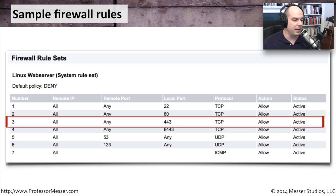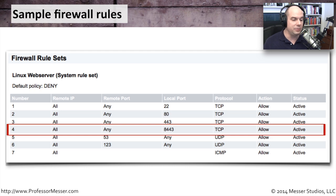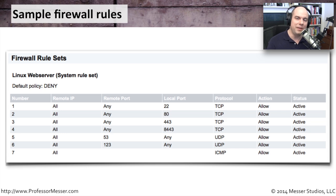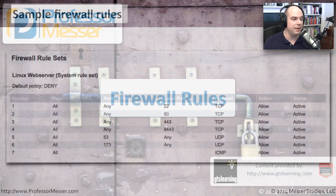Rule number three: from any remote IP on any remote port, over port 443 TCP — allow it. Port 443 is HTTPS. You step through this list to ensure everything is configured as intended. Rule four allows all IPs from any port to local port 8443 over TCP — that's not a well-known port. Port 8443 is used to access the management interface of the web server. If you don't want external users managing your web server through that interface, you may want to deny traffic from any remote IP on that port. This demonstrates how you allow or disallow traffic based on port numbers, following firewall rules one after another until one fires or traffic is implicitly denied at the bottom.